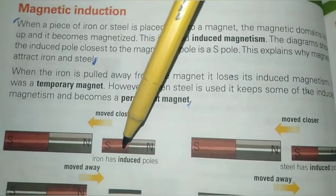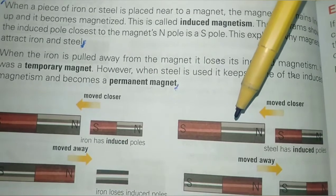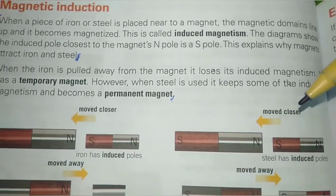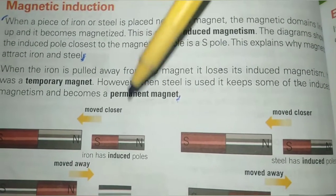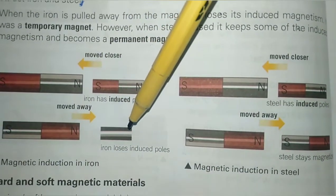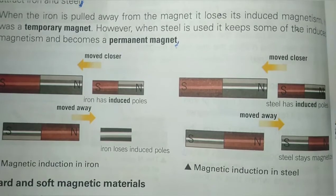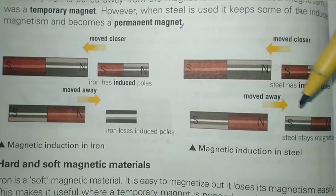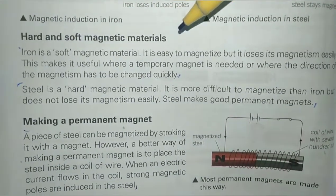The same applies to steel: when a steel rod is brought near a permanent magnet, its domains also line up and it becomes a magnet through induced magnetism. However, when iron is pulled away from the magnet it loses its magnetism, because it is a temporary magnet. But when steel is moved away from a magnet, it does not demagnetize — it becomes a permanent magnet.